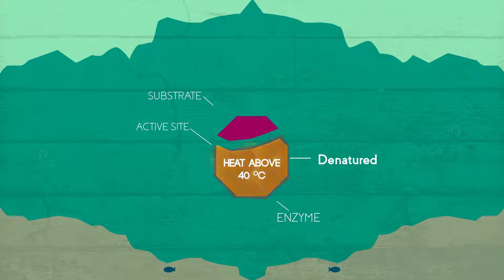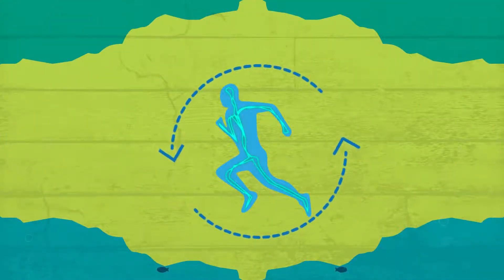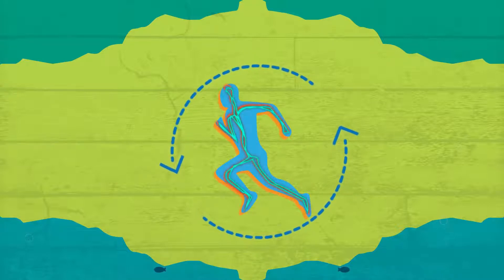One consequence of denaturation can be disturbance of the organism's balance, also called homeostasis.